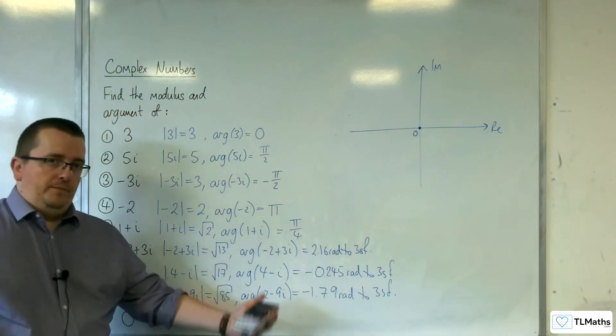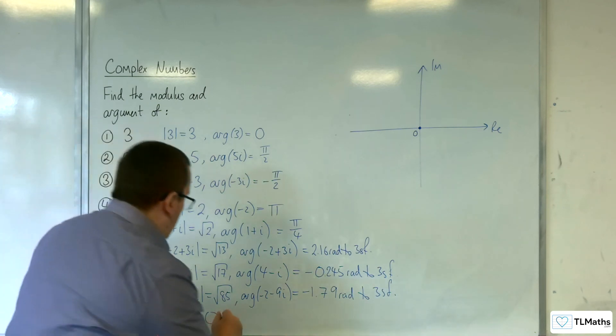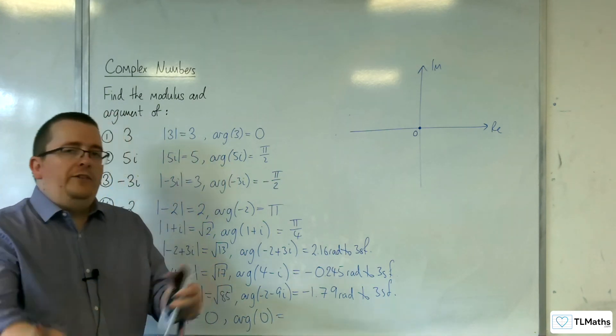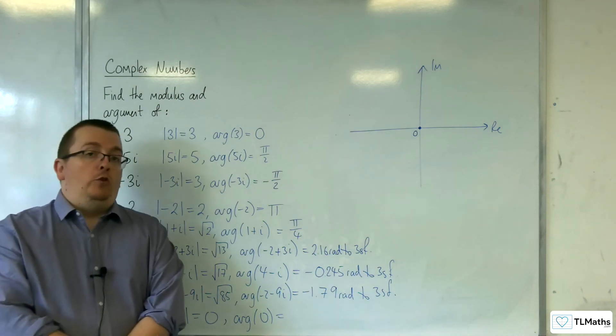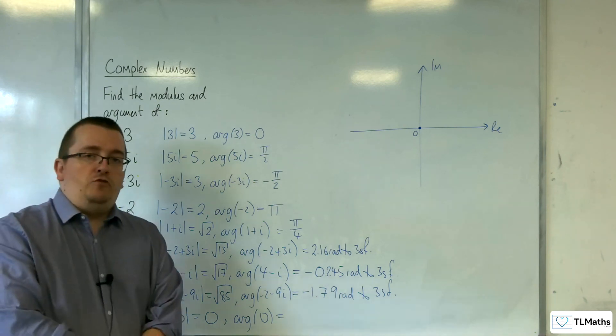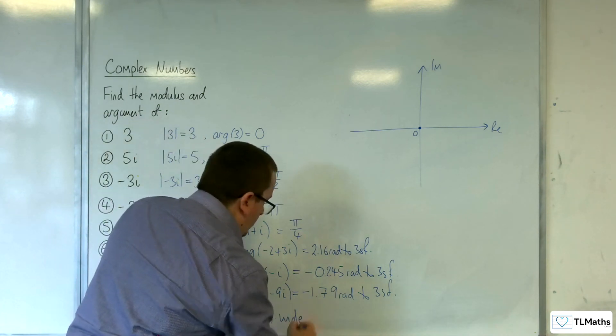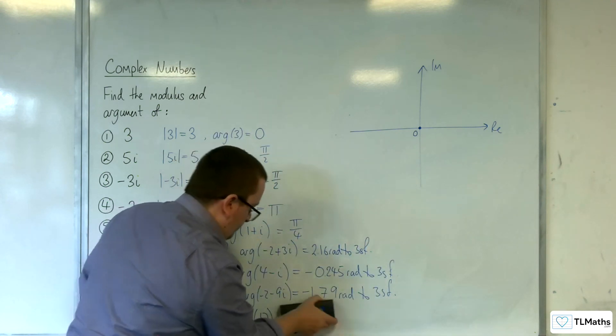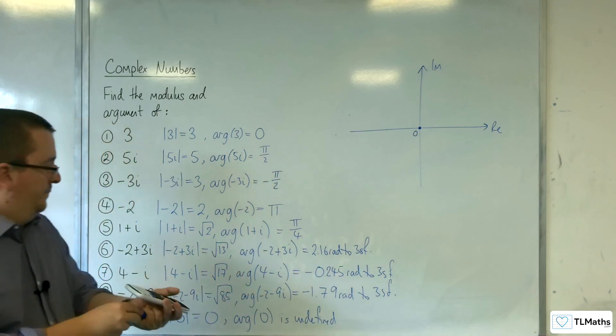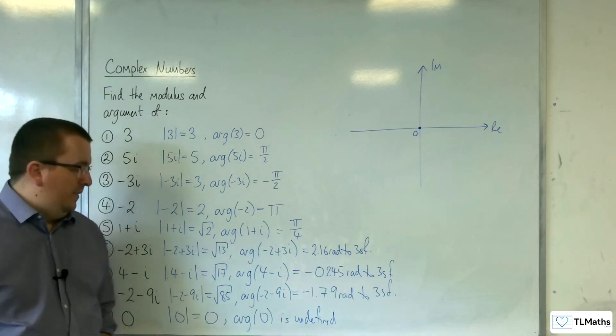Last one. Well, hopefully you can guess what the modulus is, right? Because the distance it is away from the origin is 0. The argument, however, now think about that. What angle is it making with the real axis? Now, because it's of 0 length, that cannot be determined. So you could theoretically, it could be pointing in every direction or any direction. And so the argument of 0 is undefined. It's a curious one where we have every complex number has an argument apart from 0. That is the odd one out.